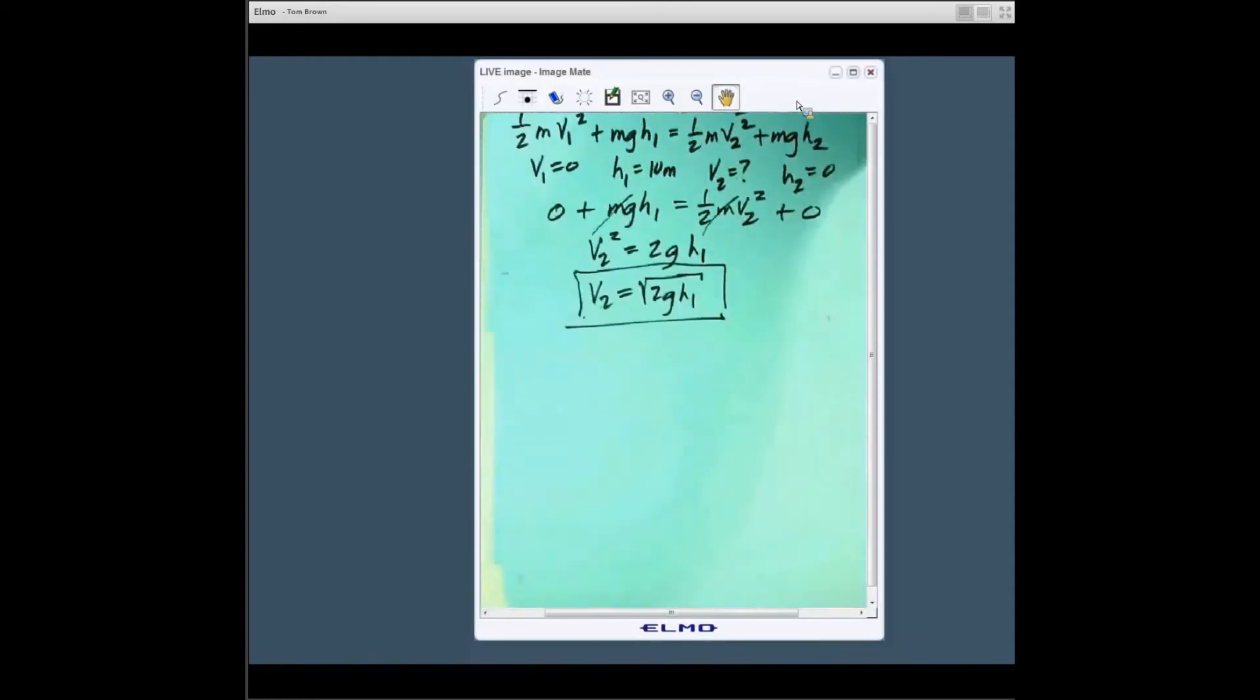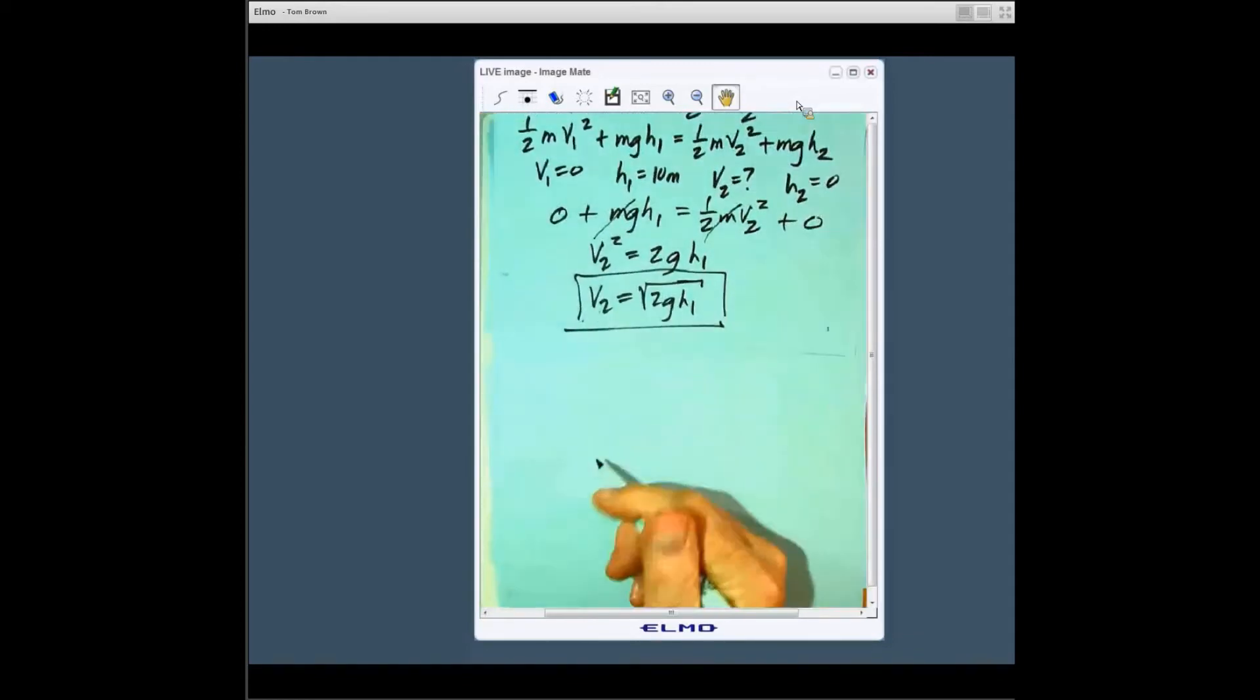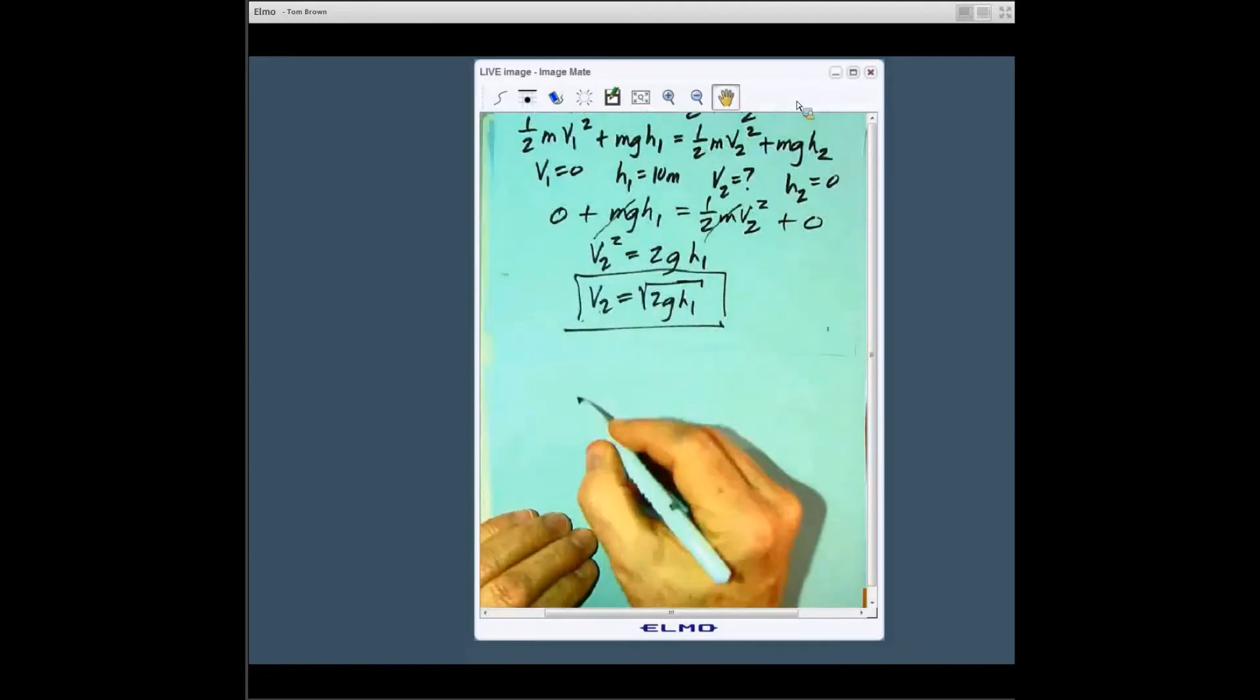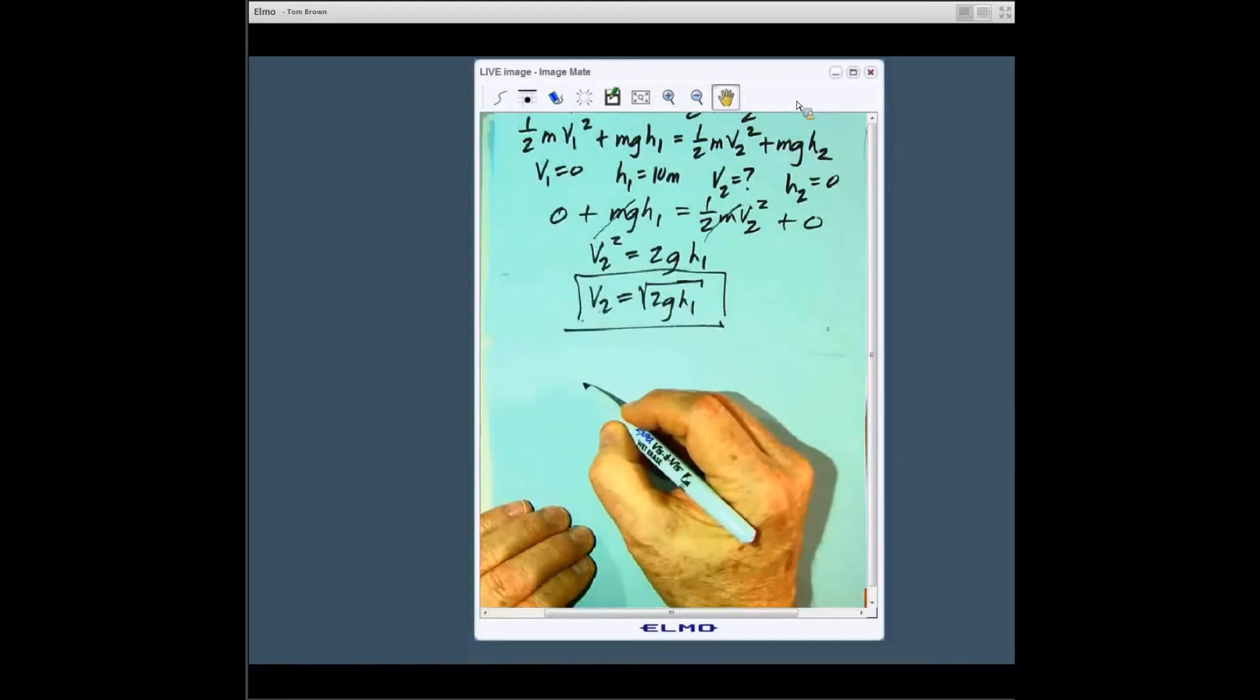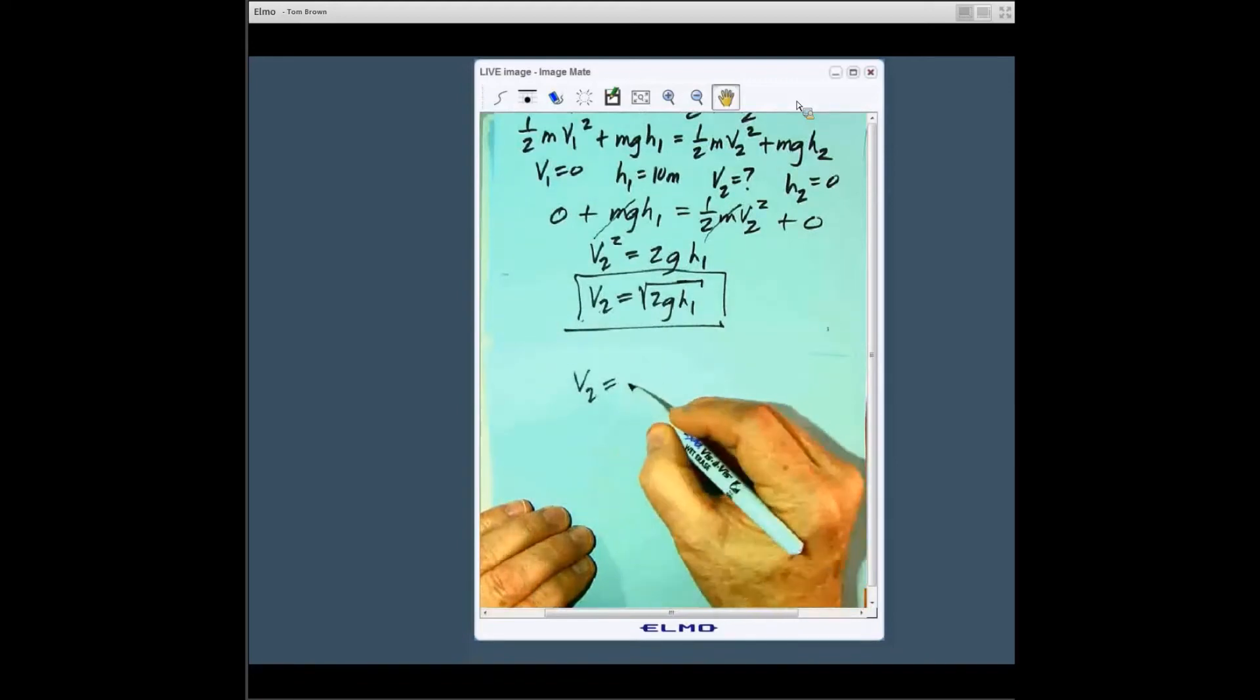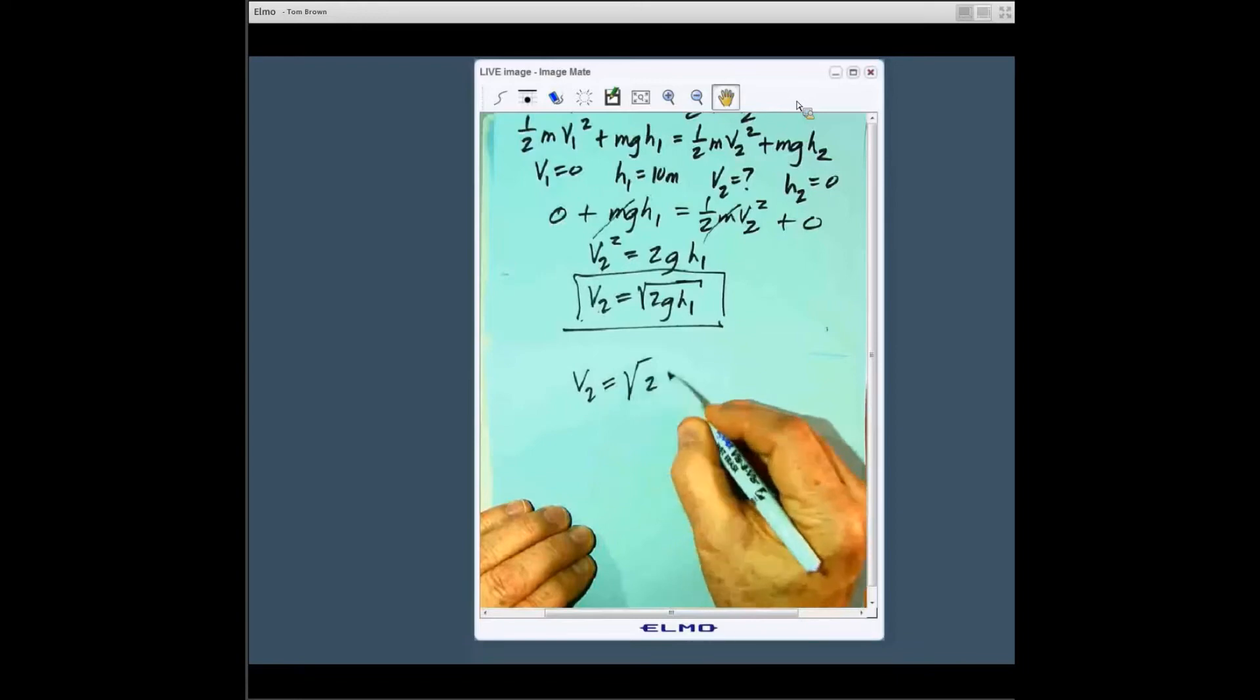Well now we can put in the numbers that we have. This is the general result. So v2 equals the square root of two times g, in this case this is a metric problem so we got 9.8 meters per second squared times the height which is 10 meters.